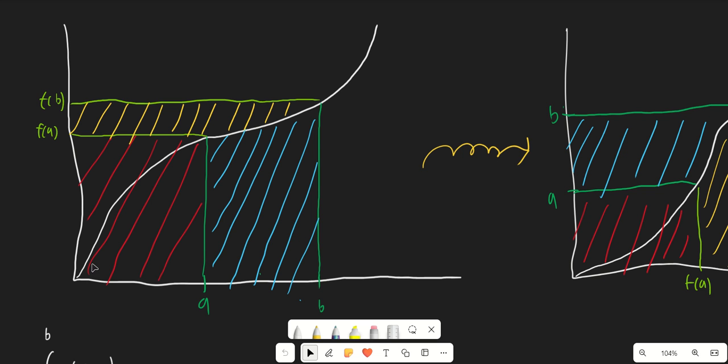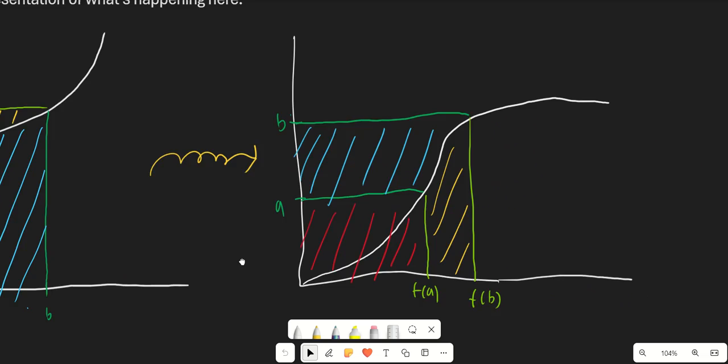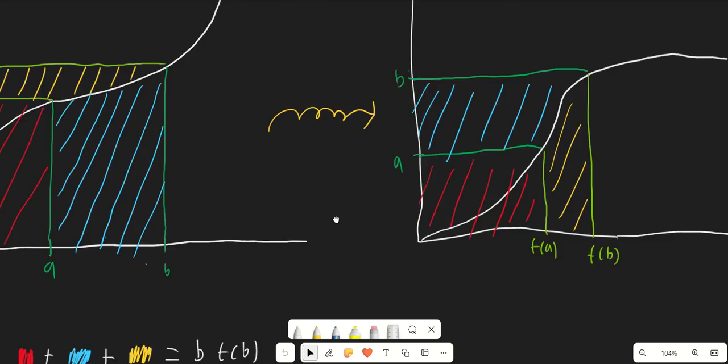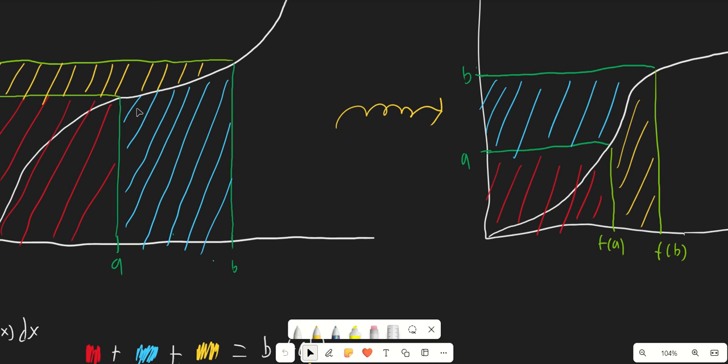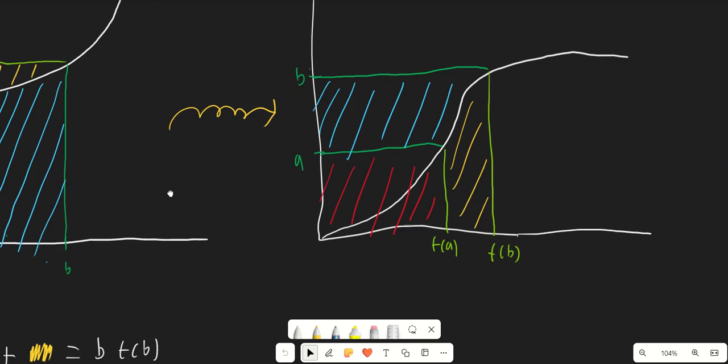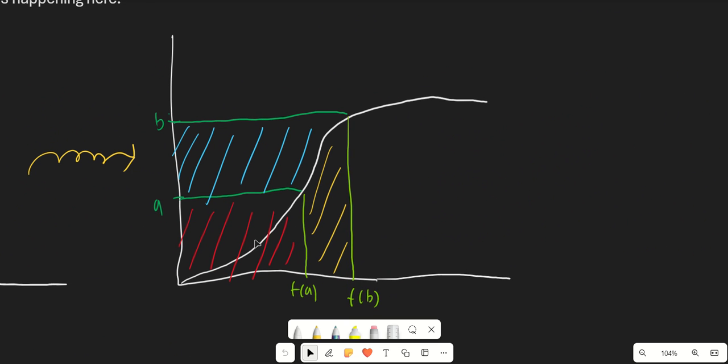essentially we're going to draw a line from y equals x and then reflect this graph right over the line y equals x, and that's going to give us a graph that looks roughly like this. If we also rotate the areas and reflect them over that line as well, this is what we're going to get. We have f(a) and f(b) now on the x axis and a and b on the y axis, and I've rotated the areas as well.